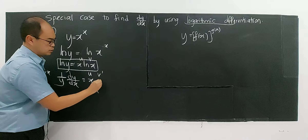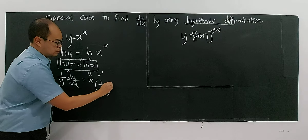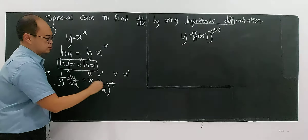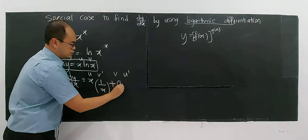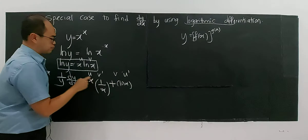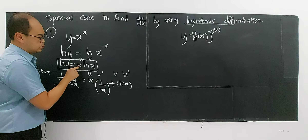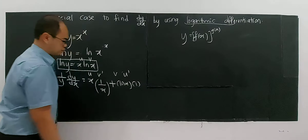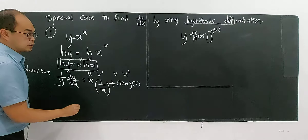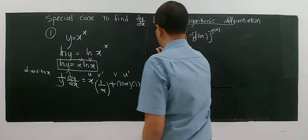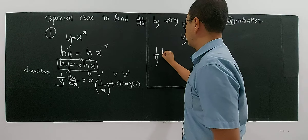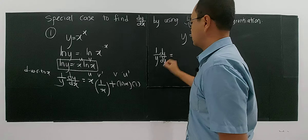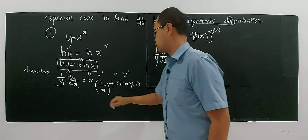With this, I can start using implicit differentiation. I have forced this expression into this form by using ln, and I will use implicit differentiation to differentiate this implicit function. So now I will start differentiating with respect to x.